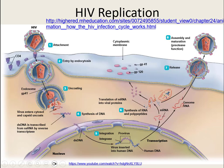Once the virus gets into the body, it uses GP120 and GP41 to recognize CD4 white blood cells, which have docking sites that HIV recognizes with its proteins. It attaches, and the entire virus gets engulfed by endocytosis. The envelope is shed immediately, releasing the genetic material — single-stranded RNA with the reverse transcriptase enzyme — which then undergoes reverse transcription to produce double-stranded DNA.